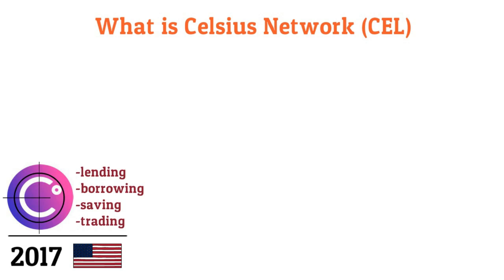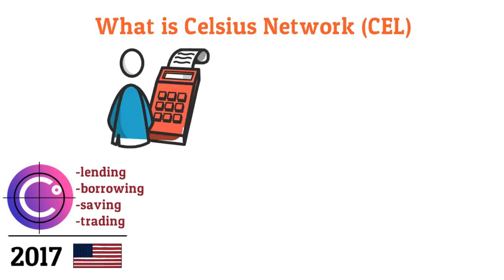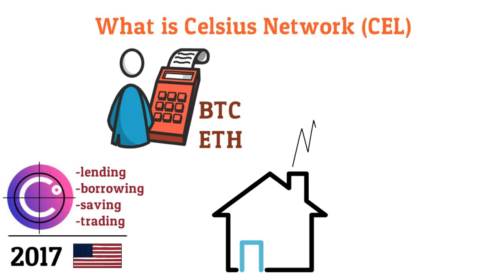How does Celsius work? Celsius allows users to deposit crypto assets such as BTC, ETH, and other stablecoins to the platform. In return, investors earn an APY, annual percentage yield that could go as high as 18%.